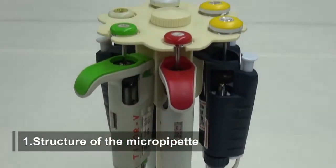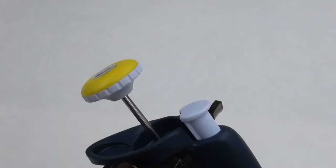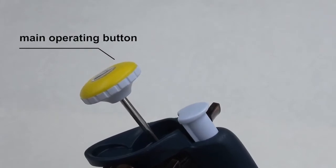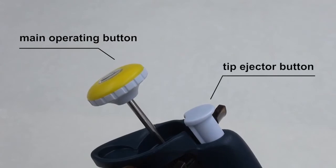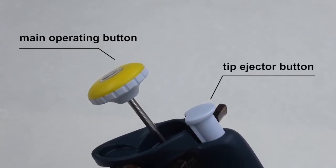Structure of the MicroPipet. At the top of the MicroPipet is the main operating button, which sometimes doubles as the volume adjustment dial. The tip ejector button on the side is used to eject tips.